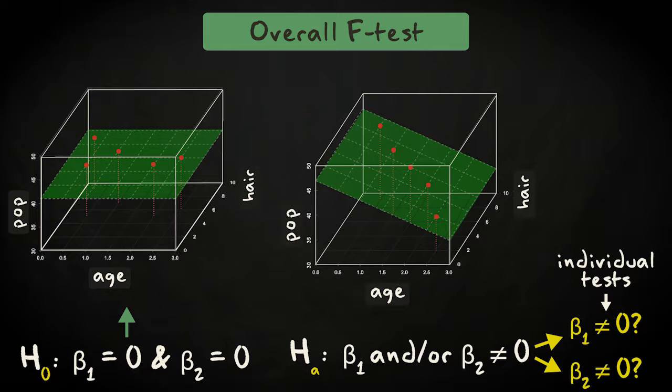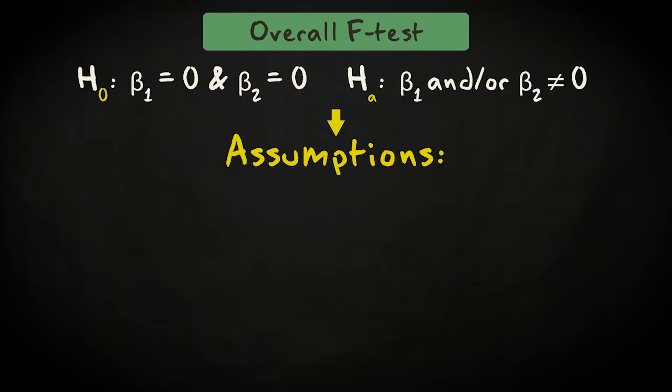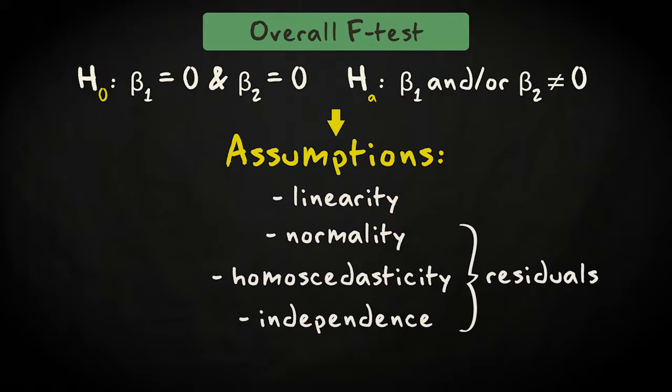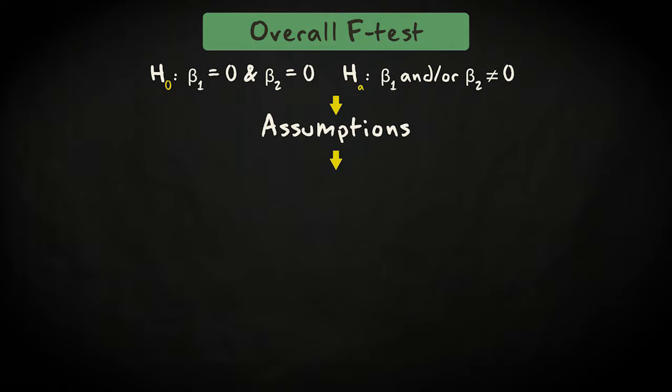The overall test, like always, is associated with a number of assumptions that need to be met in order for the test to give valid results. These assumptions are linearity of each predictor and the response variable for each value of the other predictors, and normality, homoscedasticity, and independence of the residuals. Another more technical requirement is that you need enough observations relative to the number of predictors. I'll discuss the assumptions and how to check them later on. First let's see how to perform the test.